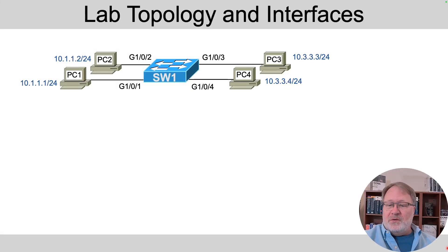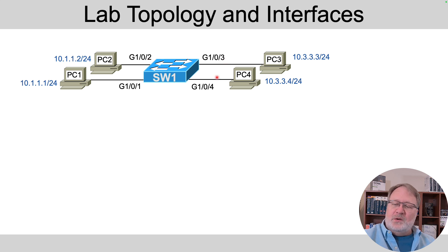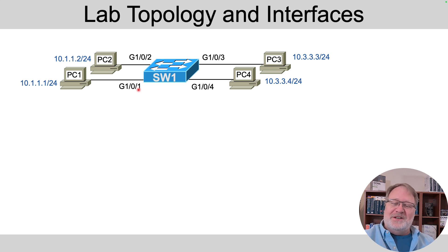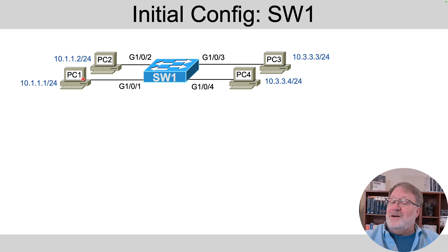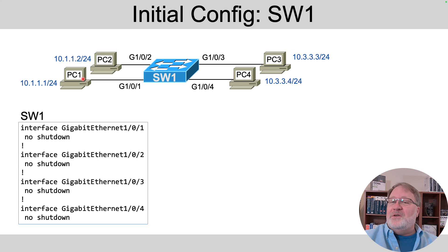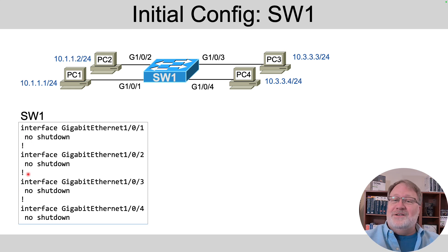Let's talk through the lab topology. We've got switch SW1 with four ports — the port IDs end in 1, 2, 3, and 4 — and they connect to PCs 1, 2, 3, and 4, so the last digit of the interface ID matches the PC number, which makes it easy to keep track of. The lab also shows the initial config, which confirms that all the ports are not shut down — they're administratively enabled.